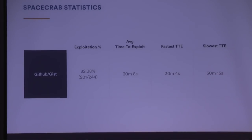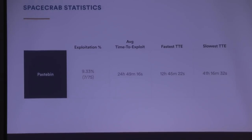Okay, statistics. I messed up my deployment script so I didn't note down GitHub and gist separately, but they're exploited in exactly the same way. 82% of the creds I put on GitHub got used, and they all got used 30 minutes after they went live — within a couple of seconds of 30 minutes every time. I have no idea why. Pastebin, on the other hand, less than 10% of the keys got used, and that's a better hit rate than some commercial secret storage services I've used in the past. So consider Pastebin for your storage needs.